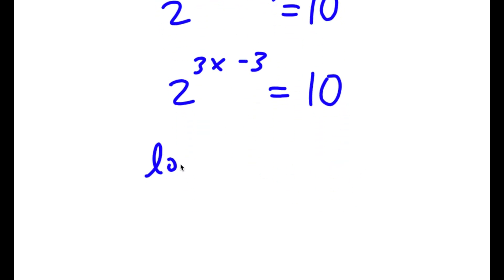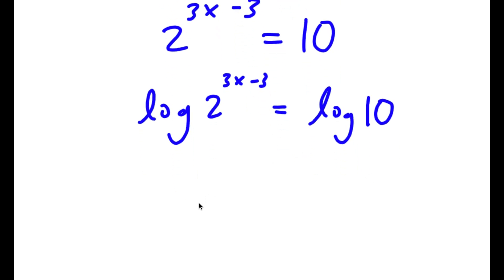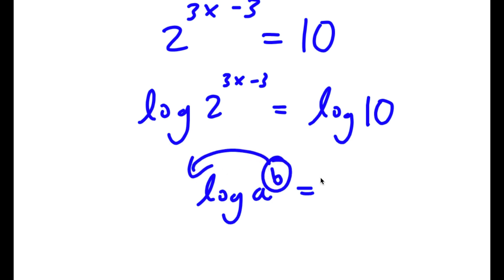Now I'm going to take the log on both sides, so I get log of 2 to the power of 3x minus 3 is equal to log of 10. If I have something in the form log of a to the power of b, I can move the exponent b to the front, so this equals b times log a.